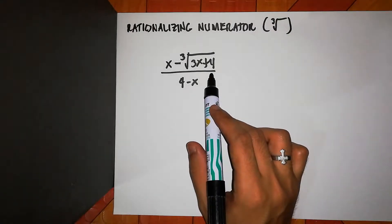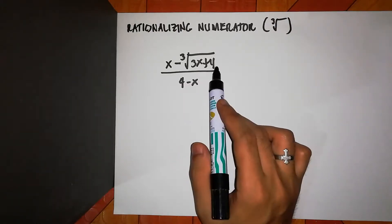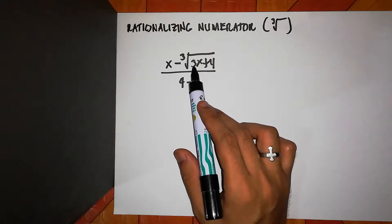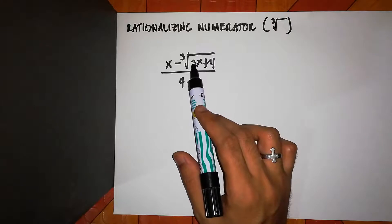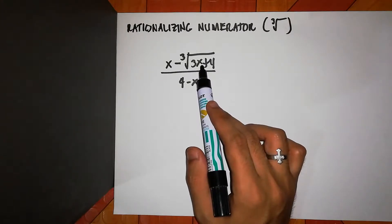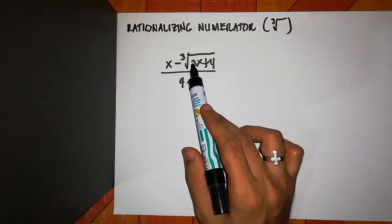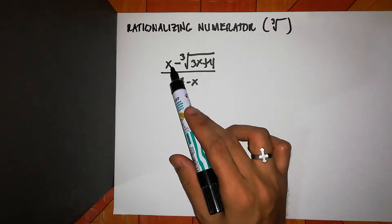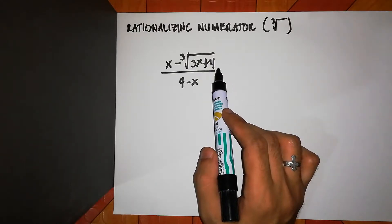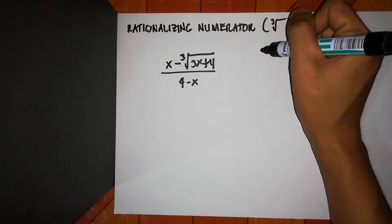In rationalizing a numerator, commonly we multiply the numerator and denominator by the conjugate of the numerator. But that is the common mistake of the student, because they did not see that 3x plus 4 is being raised to 1 third. So usually they just multiply by the conjugate, which is x plus cube root of 3x plus 4. If that is your multiplier, you will not be able to cancel the radical sign.